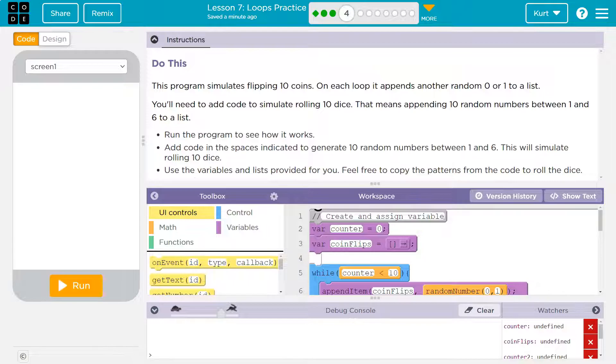Do this. This program simulates flipping 10 coins on each loop. It appends another random, but that means adds to the end of a list, another random zero or one to the list.